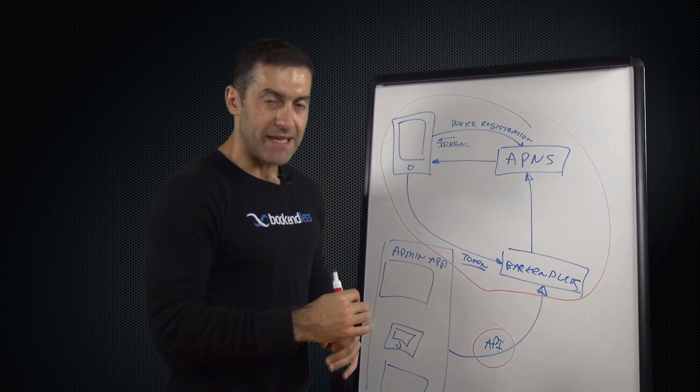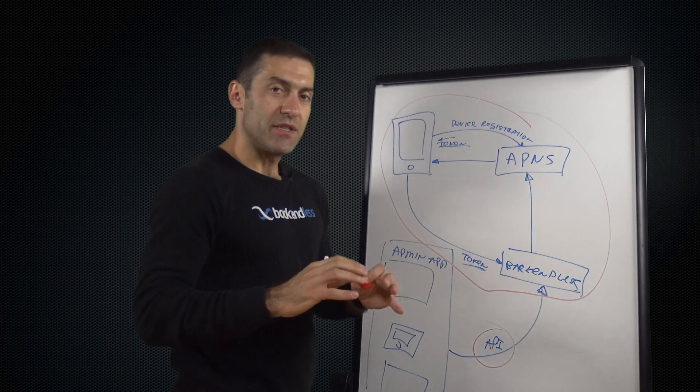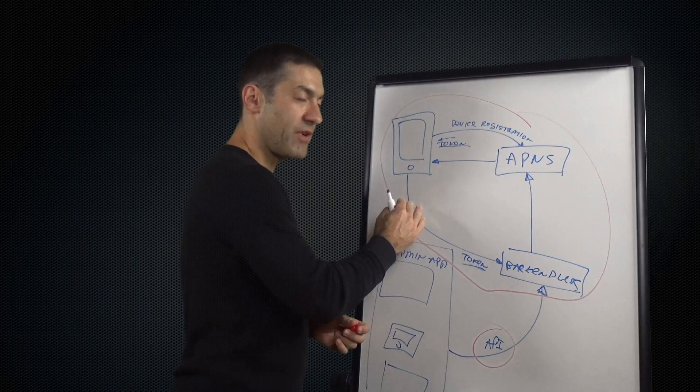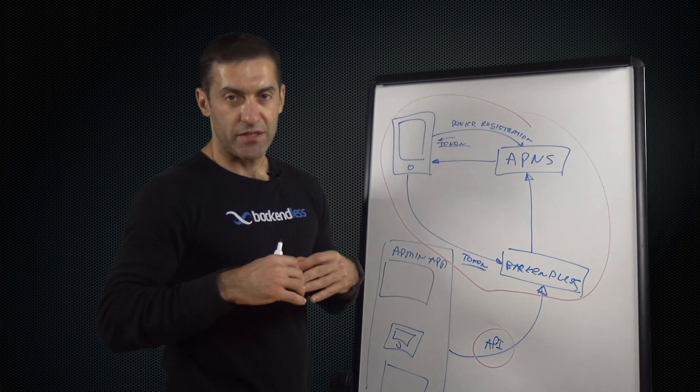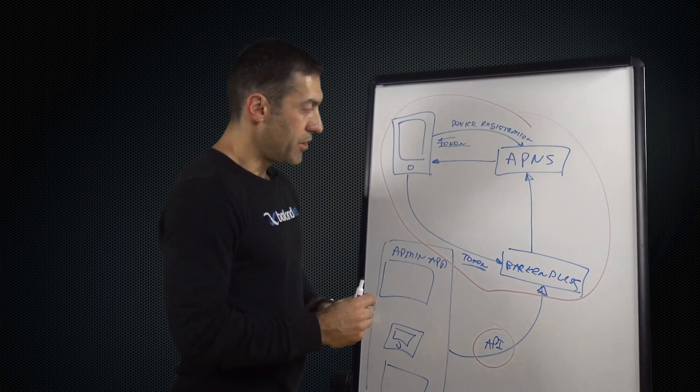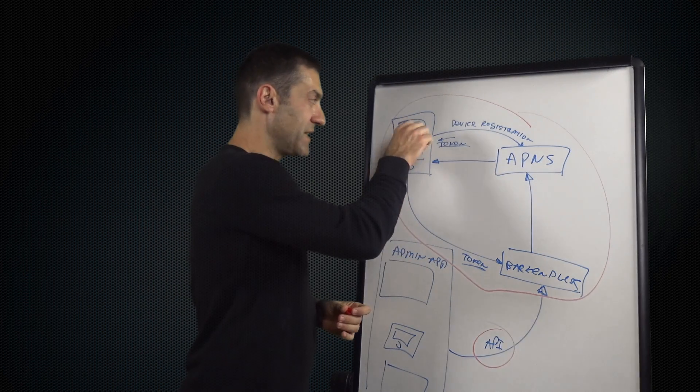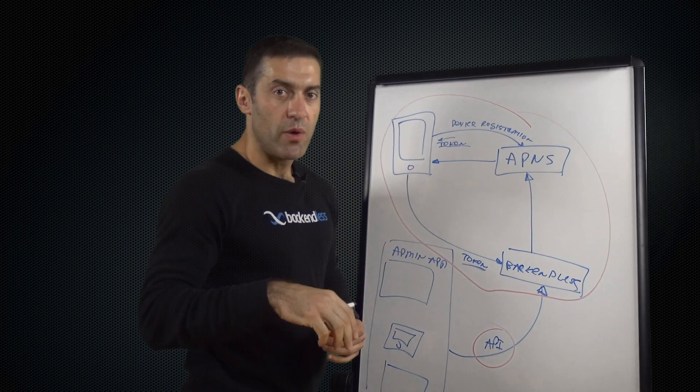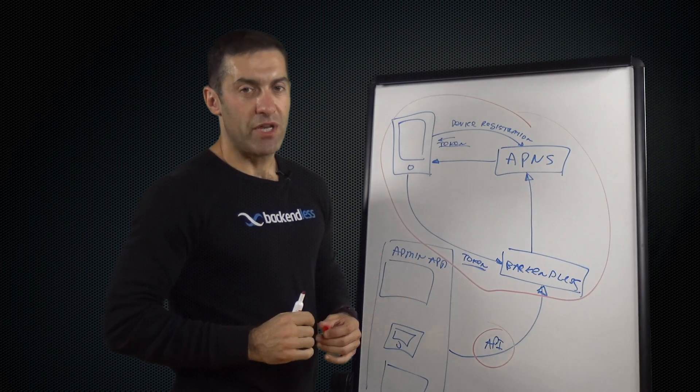Whenever push notifications are being sent, you can customize and configure what information will actually be delivered. So in case of iOS, you can say that this is going to be a text notification that just displays some information as text. You can do a badge update, which will basically update a little number on application icon. You can play a sound, or you can do a combination of those things.